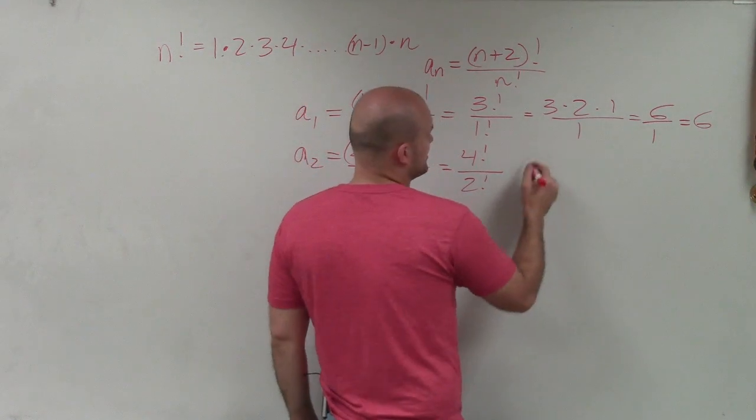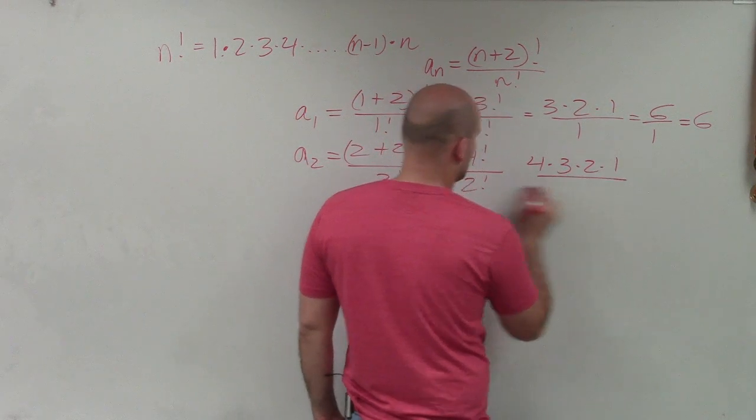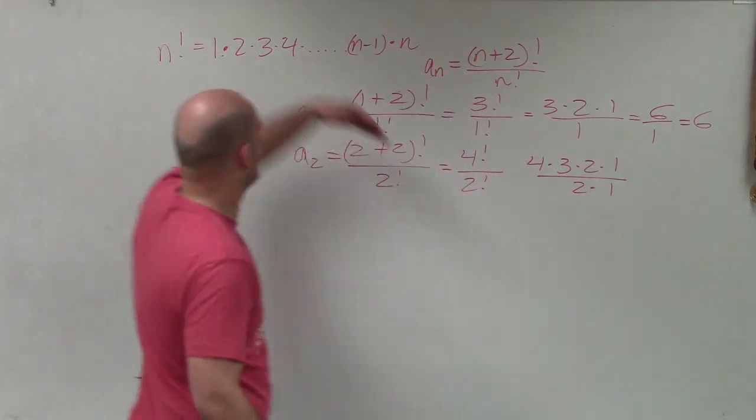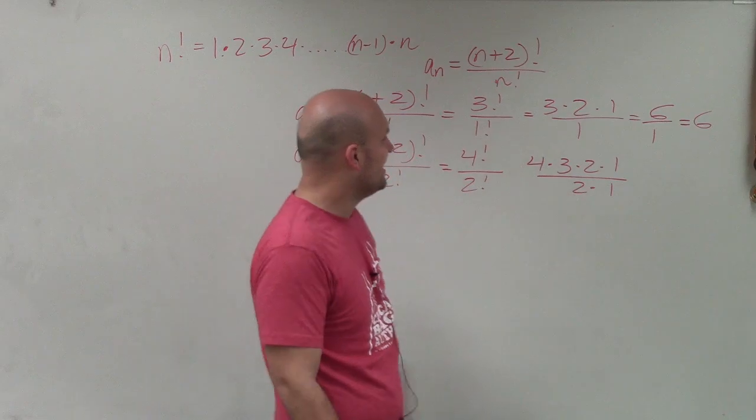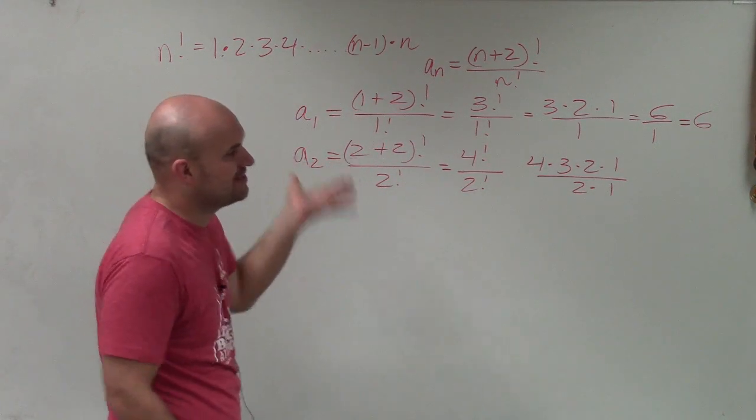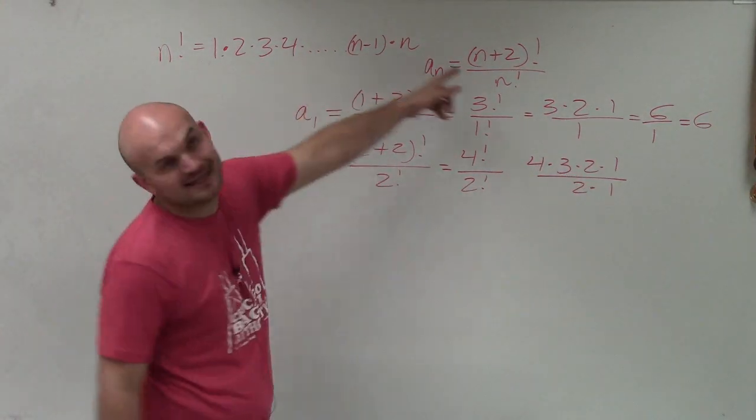What's nice about this is if I was going to write out the factorial, 4 times 3 times 2 times 1 all over 2 factorial is 2 times 1. And I know I'm going in the descending order where I gave you the formula in the ascending order. Sorry about that. You can write them either way. You can go descending down to 1 or you could go ascending up to your number.